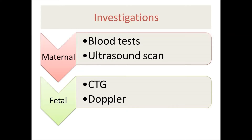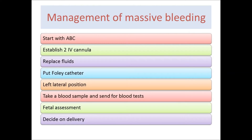If a patient presents with massive bleeding we must intervene more rapidly. We start with the ABCs: check the airway, apply oxygen, and check circulation. We establish two IV cannulas, replace fluid — the best fluid is blood, but if unavailable we start with a crystalloid like normal saline. A urinary catheter is inserted to measure fluid input and output. We place the mother in a left lateral position to avoid compression of the inferior vena cava by the gravid uterus.